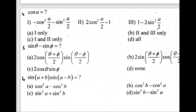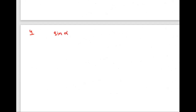The fourth question: cos a equals which of the following — option 1: negative cos²(a/2) minus sin²(a/2); option 2: 2cos²(a/2) minus 1; or option 3: 1 minus 2sin²(a/2)? I'll refer to the trigonometric identity: sin(α/2) equals the square root of (1 minus cos α) divided by 2. Since we want cos α, let's make it the subject.